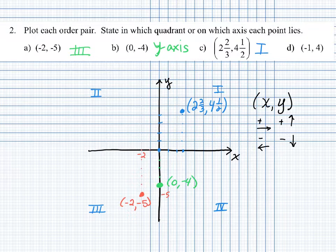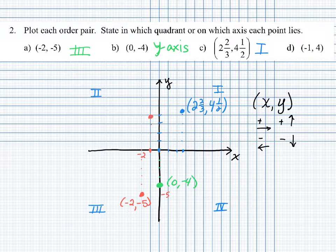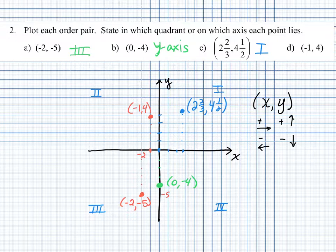In part D, we have a point located at negative one in the x direction. Starting at the origin, we go to the left one unit, then move up four units in the y direction. This point is negative one, four, and we can see that it's located in quadrant two.